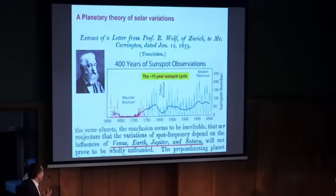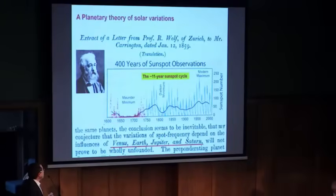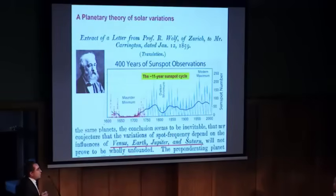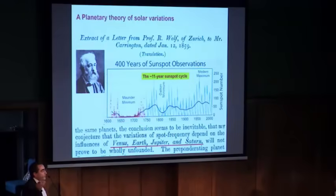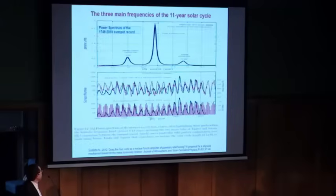He had this intuition — he did not demonstrate anything, but he had the intuition that the oscillation in the Sun could be somehow influenced by the only oscillators we have in the solar system: the planets that go around the Sun and create some kind of harmonic signals.